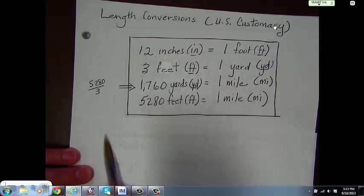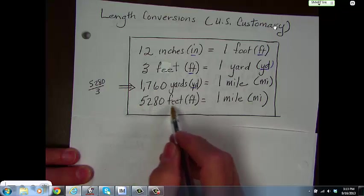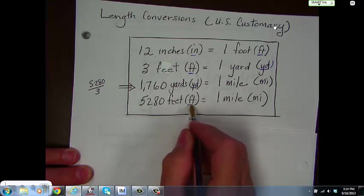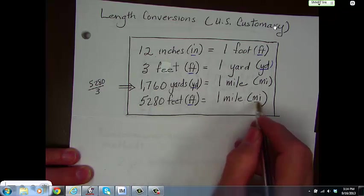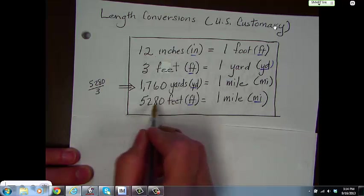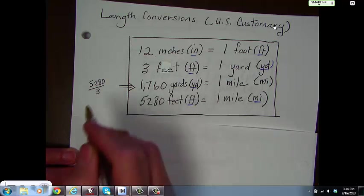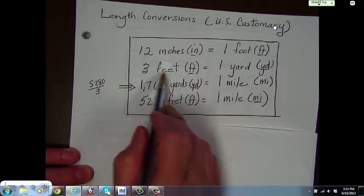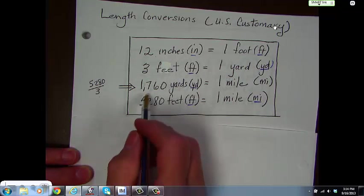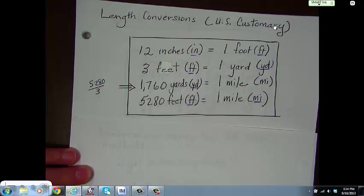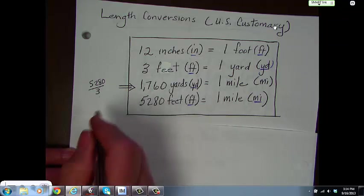How did we get that? Well, it's explained in the next step. 5,280 feet equals 1 mile. If you take 5,280 feet and divide it by 3, because there's 3 feet in a yard, you end up with 1,760 yards. So, that's how that's accomplished.